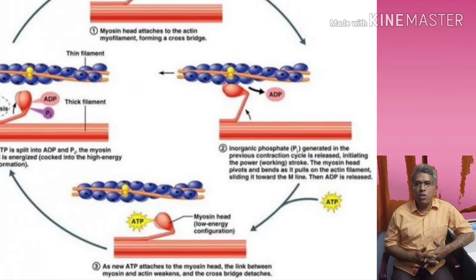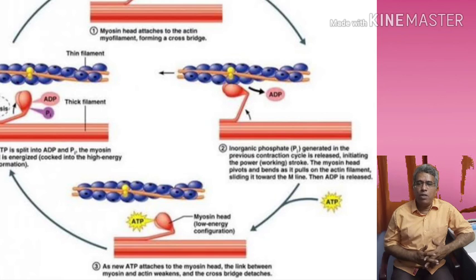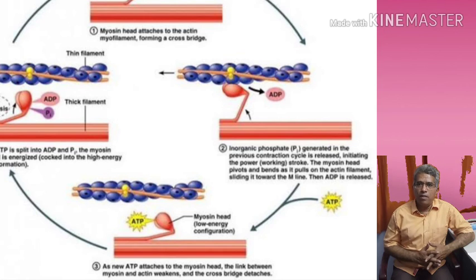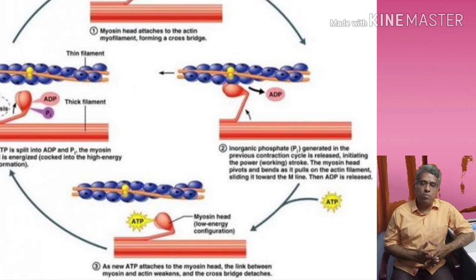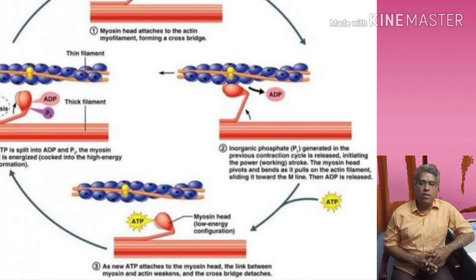After death, due to exhaustion of creatine phosphate, ATP is no longer regenerated. As a result, the muscle enters a permanent state of contraction. This permanent state of contraction of skeletal muscles after death is called rigor mortis. Rigor mortis provides a useful clue in post-mortem examinations regarding the cause and time period of death. These are the physico-chemical and biochemical changes that occur during muscle contraction.